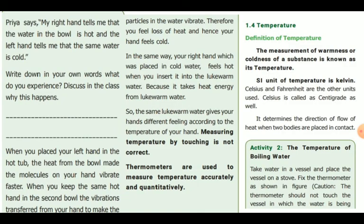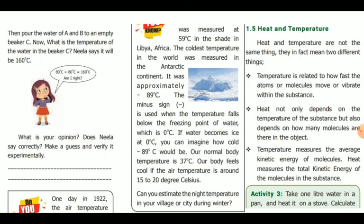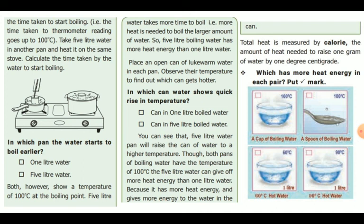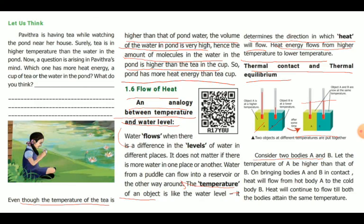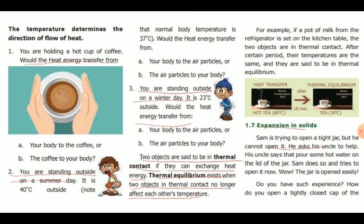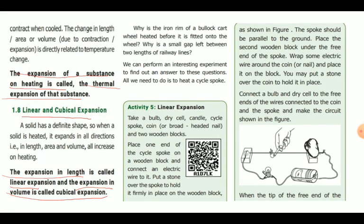Temperature is a measure of the level of heat. We refer to temperature as a degree of hotness or coldness. For example, water is 1 degree Celsius. Heat flows from higher temperature to lower temperature — that is the direction of heat flow. When heat flow stops, we call it thermal equilibrium. Linear expansion is length expansion, and cubical expansion is volume expansion.